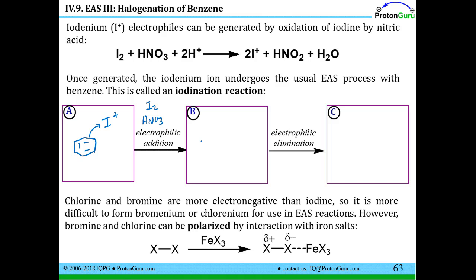Electrophilic addition is always the first step of an electrophilic aromatic substitution reaction. After electrophilic elimination you regain your aromaticity, and the product is iodobenzene.